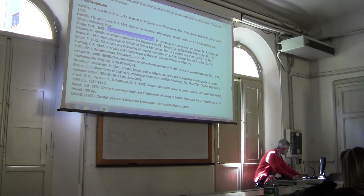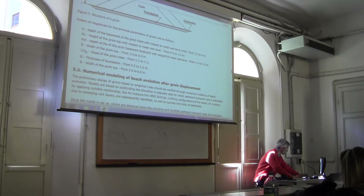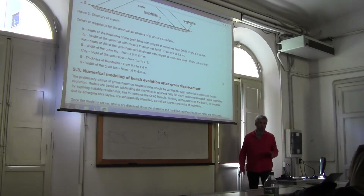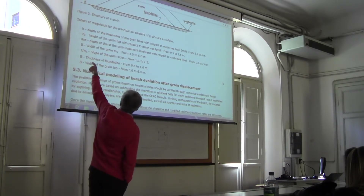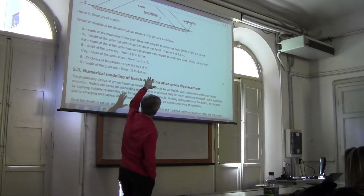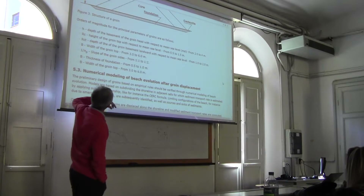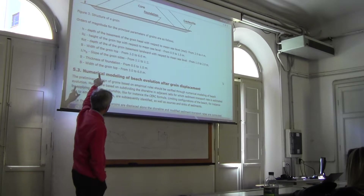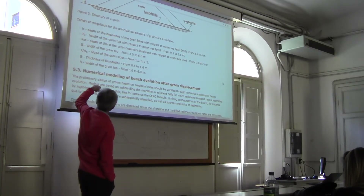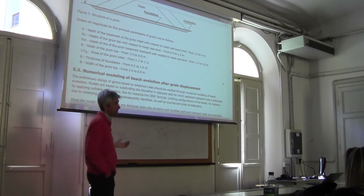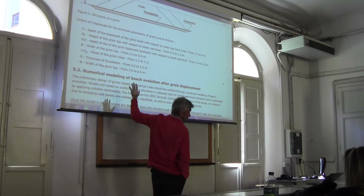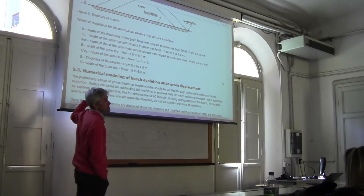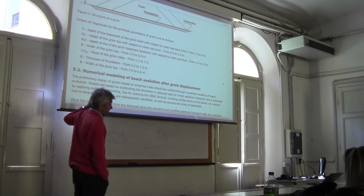Let me go back here to this point. Here there are some orders of magnitude which are extremely useful in order to give you ideas. You see the thickness of the foundation — the foundation can be done in concrete or more frequently with a mix of sand and gravel — and the width of the groin top from 3 to 6 meters. These are extremely useful because you need to know the orders of magnitude of your design. Knowledge of orders of magnitude is extremely important.